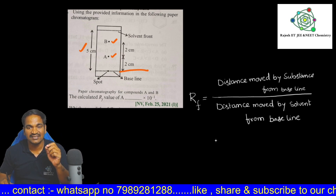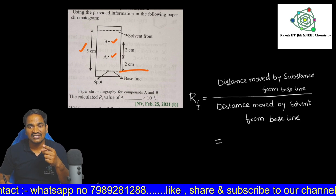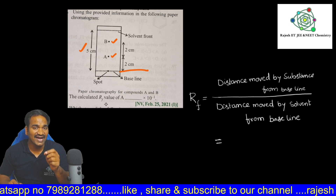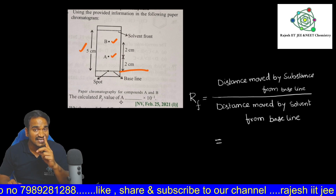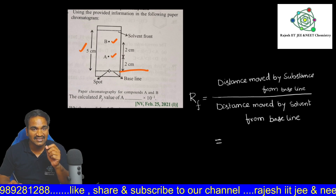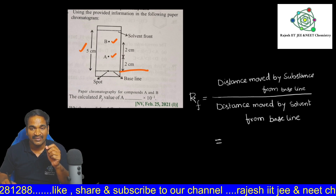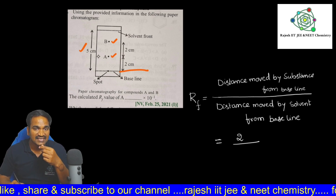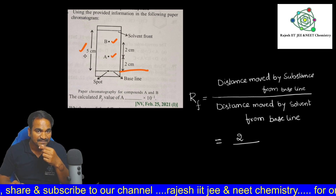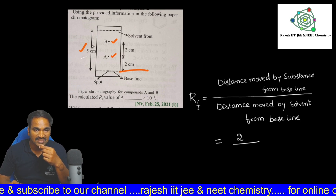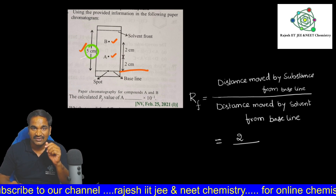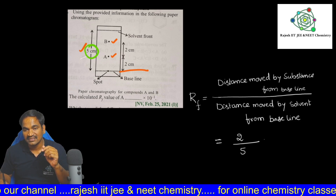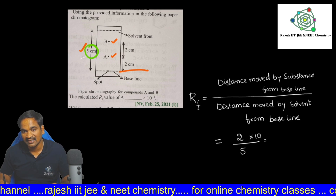Now, to solve this question, substitute into the formula: distance moved by substance A from the baseline. Substance A moved from the baseline to point A — how many centimeters? Two centimeters. Divided by the solvent distance from the baseline — how much? Five centimeters.